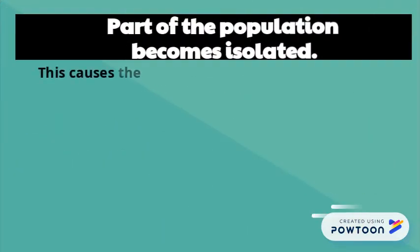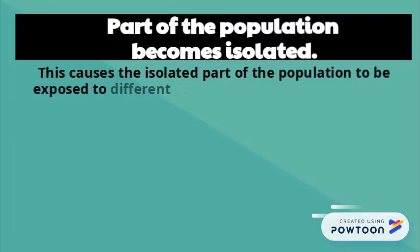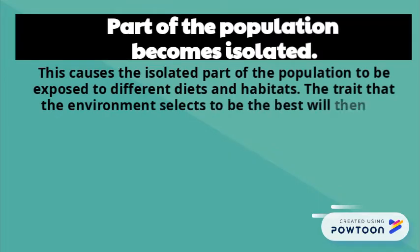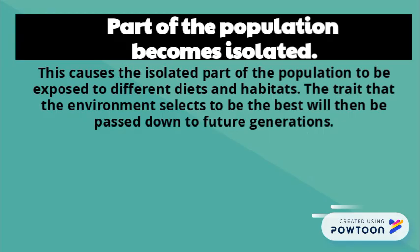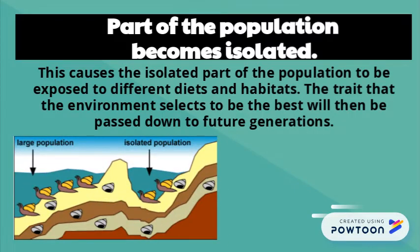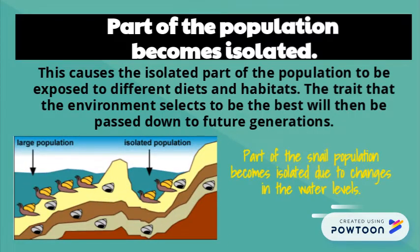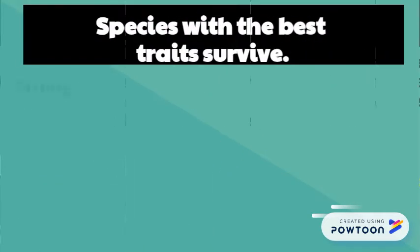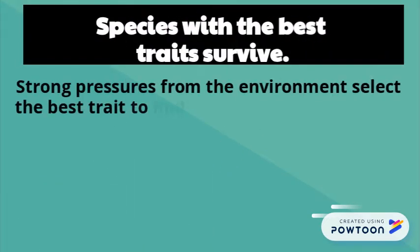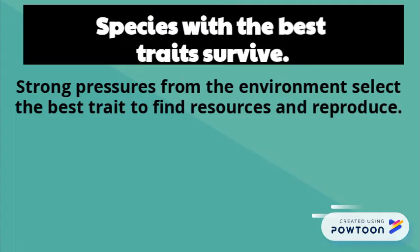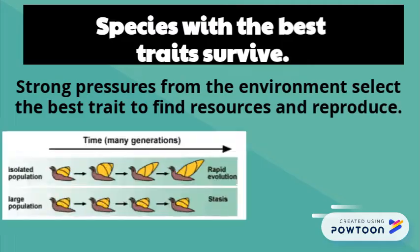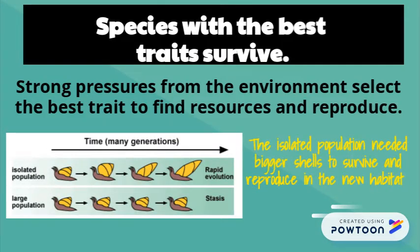The next step of punctuated equilibrium is population isolation. This is where part of the population becomes isolated or separated from the rest. In our example, a small group of snails become isolated in a tide pool. This newly isolated population will now be found in a new habitat, which will select the best traits for those organisms to be able to survive and reproduce.